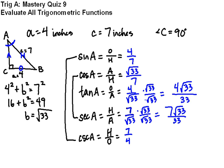The last of the six trig functions is cotangent. Cotangent is the reciprocal of tangent, that's the easy one to remember, so it's adjacent over opposite, which means that it is the square root of 33 over 4.